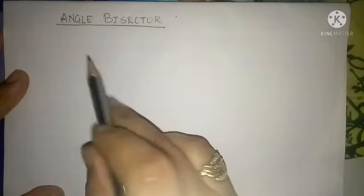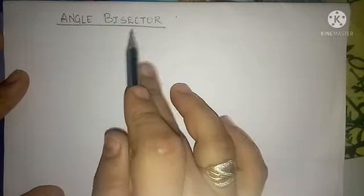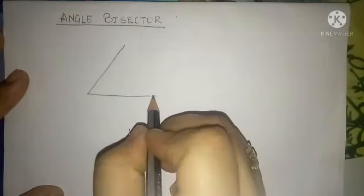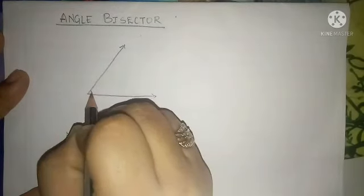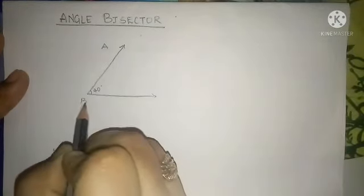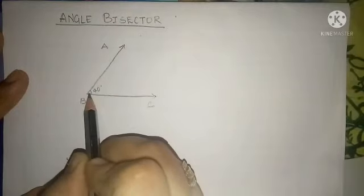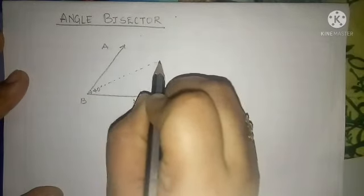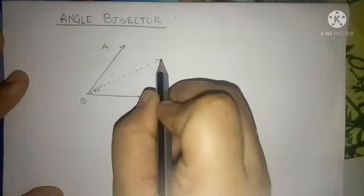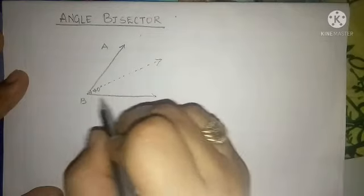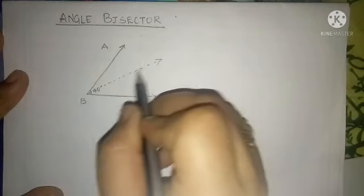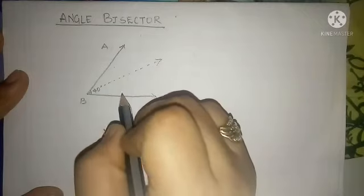The next thing I'm going to explain is angle bisector. What do you mean by angle bisector? Suppose I have drawn an angle — angle ABC — and the measurement of this angle is 40 degrees. If a ray divides this angle ABC into two equal parts, such a ray is known as your angle bisector.